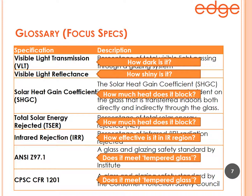To simplify: VLT is how dark is it — a film with 10% VLT is darker than one with 70% VLT. VLR is how shiny is it. SHGC and TSER are measures of how much heat does it block. Infrared rejection is how effective is that heat blocking specifically in the IR region. The last two — ANSI Z97 and CPSC — relate to tempered or safety glass ratings, helping answer customer questions about those standards.